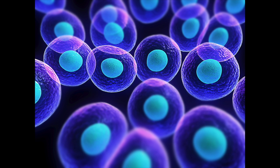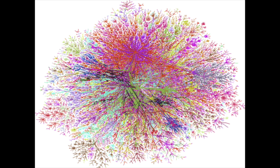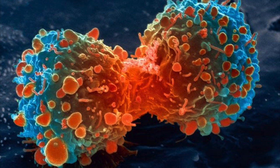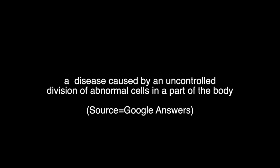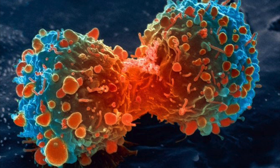Even though cells are great things that it would be impossible to live without, some things can go very wrong that could destroy or even end your life. For example, take cancer. The definition of cancer is a disease caused by an uncontrolled division of abnormal cells in a part of the body. Cancer causes a growth or tumor that results from the division of abnormal cells, which just causes more cancer.